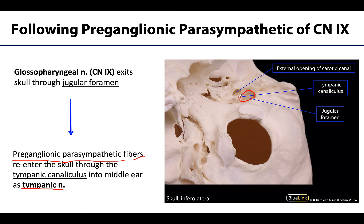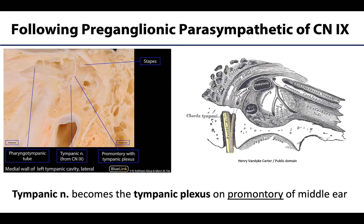If we were to look at that landmark region from the inside of the cranium, we would be looking at the petrous part of the temporal bone. The tympanic nerve, as it enters through the tympanic canaliculus, is heading into the inside of the petrous part of the temporal bone, which includes the middle and inner ears. The tympanic nerve has made its way into the middle ear — we'll discuss the middle ear in more detail in our ear session.